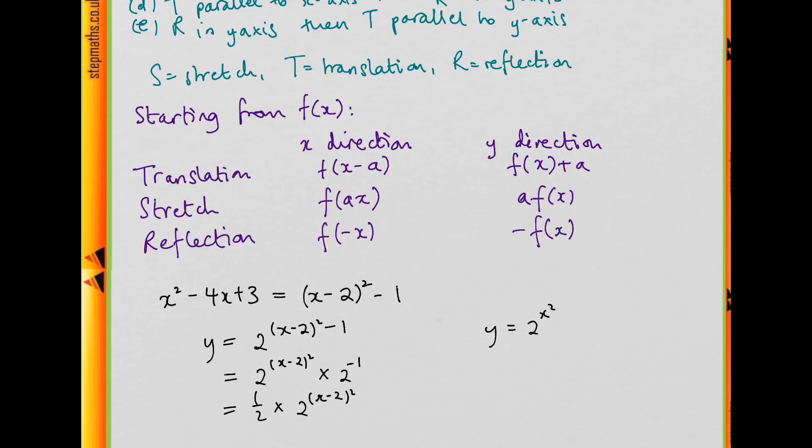actually what that meant was we had a stretch by a factor of a half out the front. So we've used a stretch in the y direction. So what we have is a translation parallel to the x direction with the minus 2 here, and then a stretch parallel to the y direction with this half.